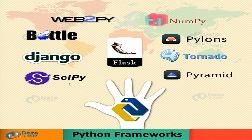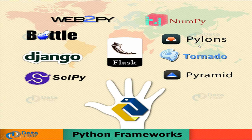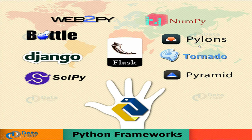SciPy is a Python library you can use for scientific computing. It has modules for linear algebra, interpolation, fast Fourier transform (FFT), image processing, and many more. It uses multidimensional arrays from the NumPy module. Pylons is a deprecated framework — meaning it is no longer recommended. It is an open source web framework that makes extensive use of third-party tools.